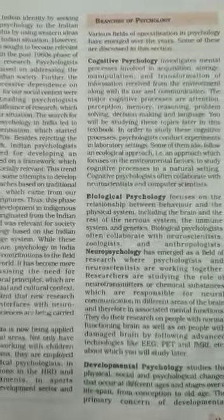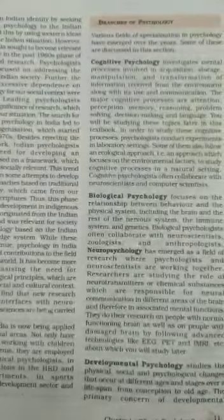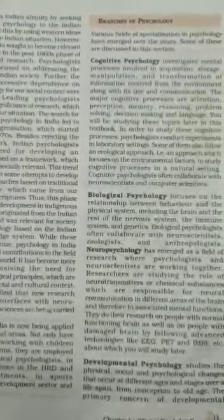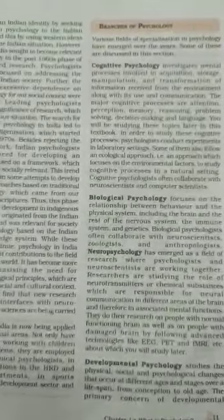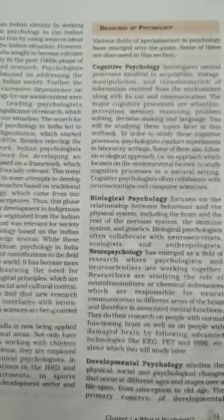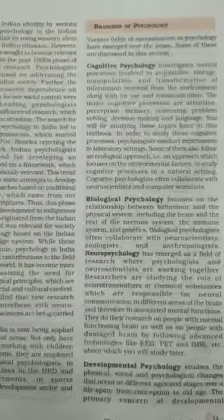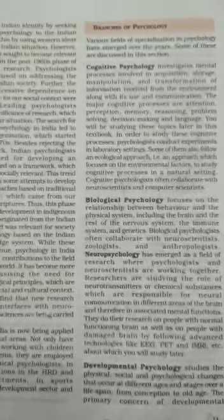The first field of psychology is cognitive psychology. Cognitive psychology investigates mental processes involved in acquisition — acquisition means the act of knowing something. Mental processes are used in order to know something, as well as for storage, manipulation and transformation of information received from the environment, along with its use and communication. The information you receive from the environment you are able to use on the basis of mental processes. Transformation and manipulation mean you are able to influence somebody or change something, and this is done with the help of mental processes.